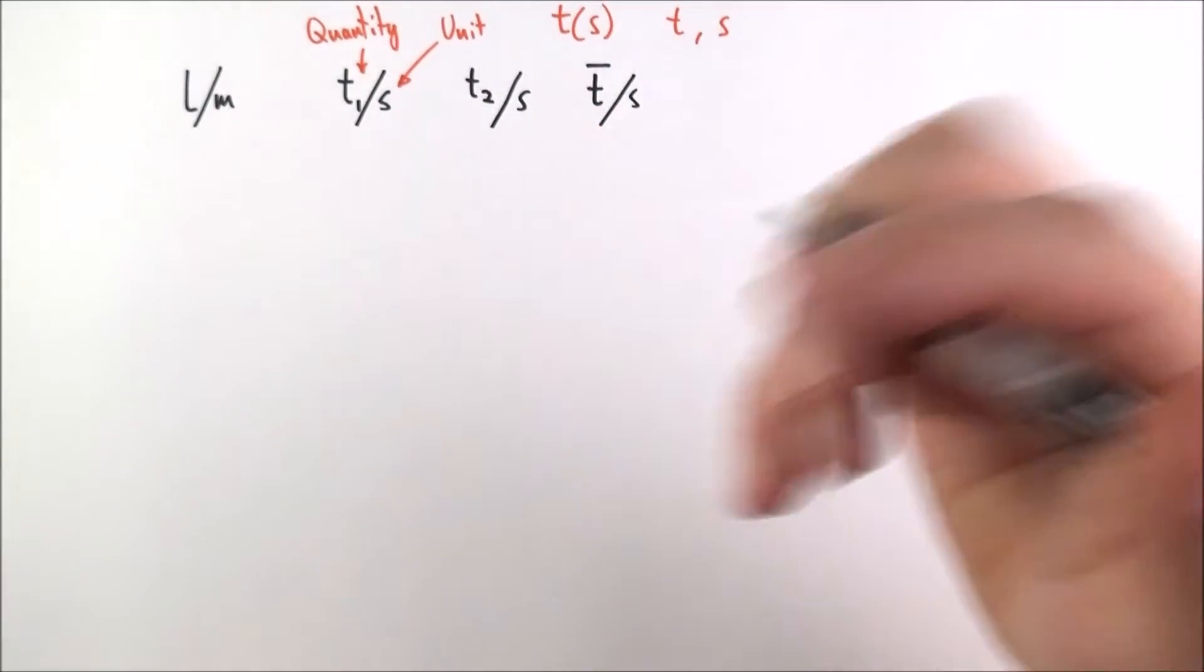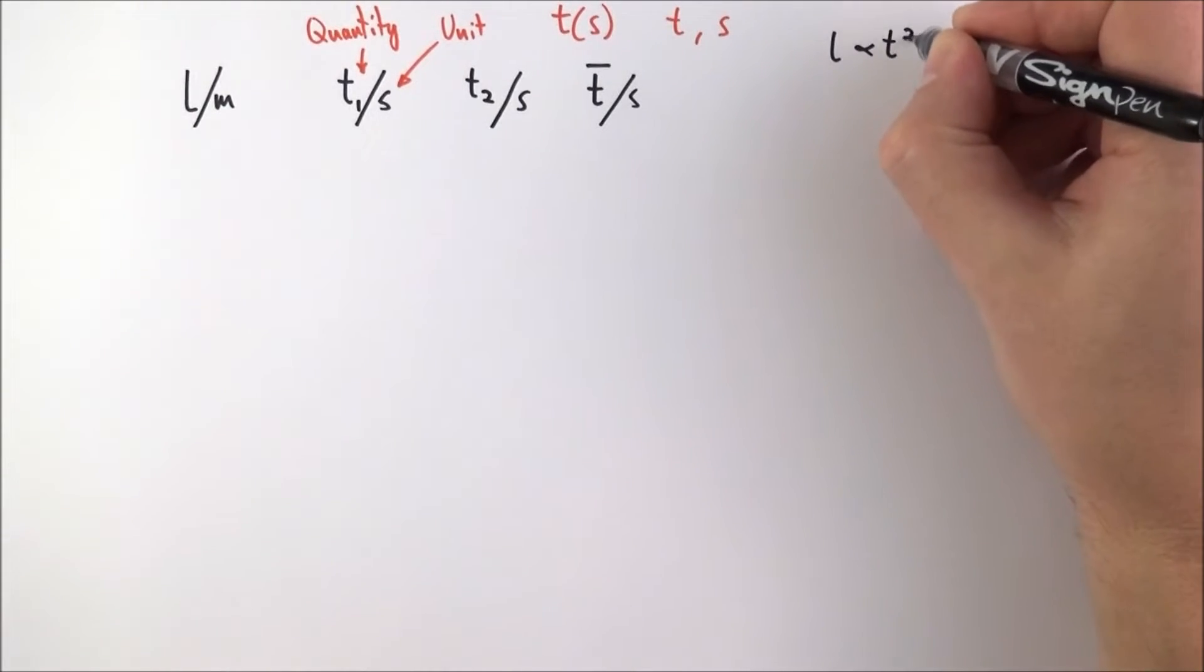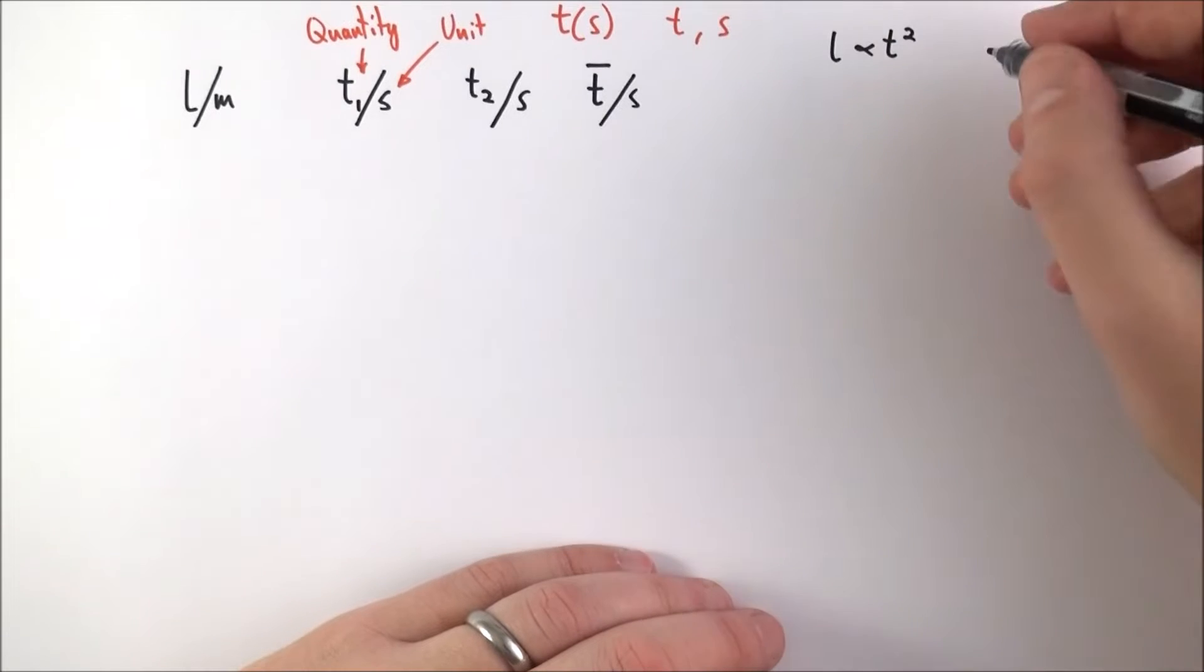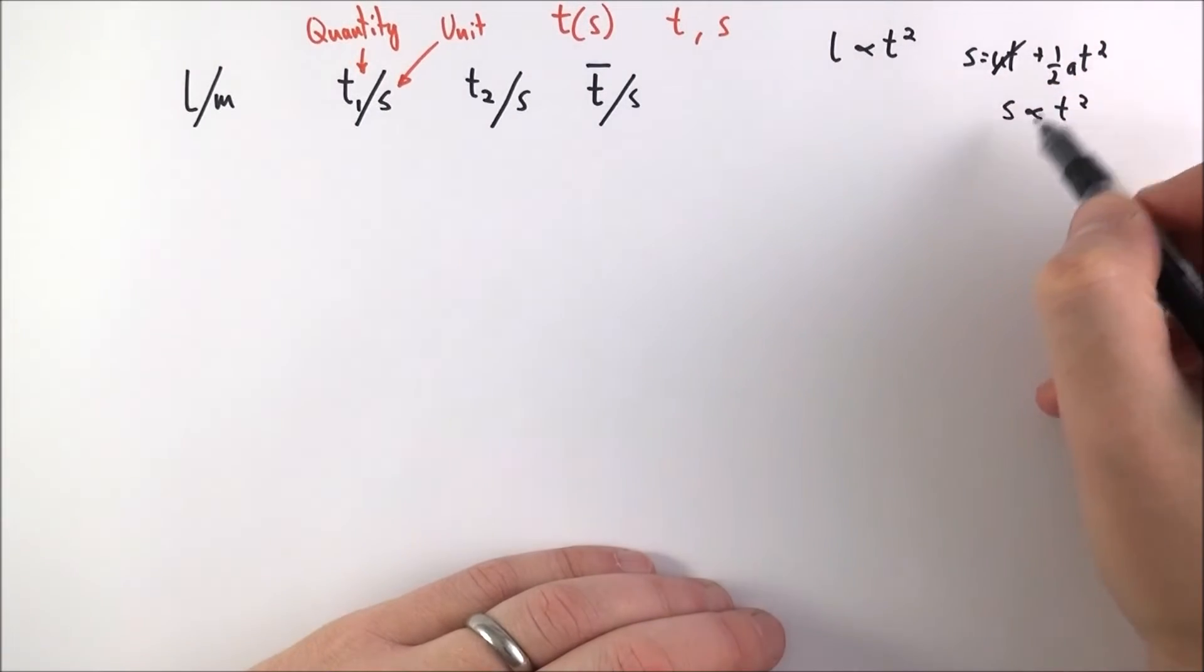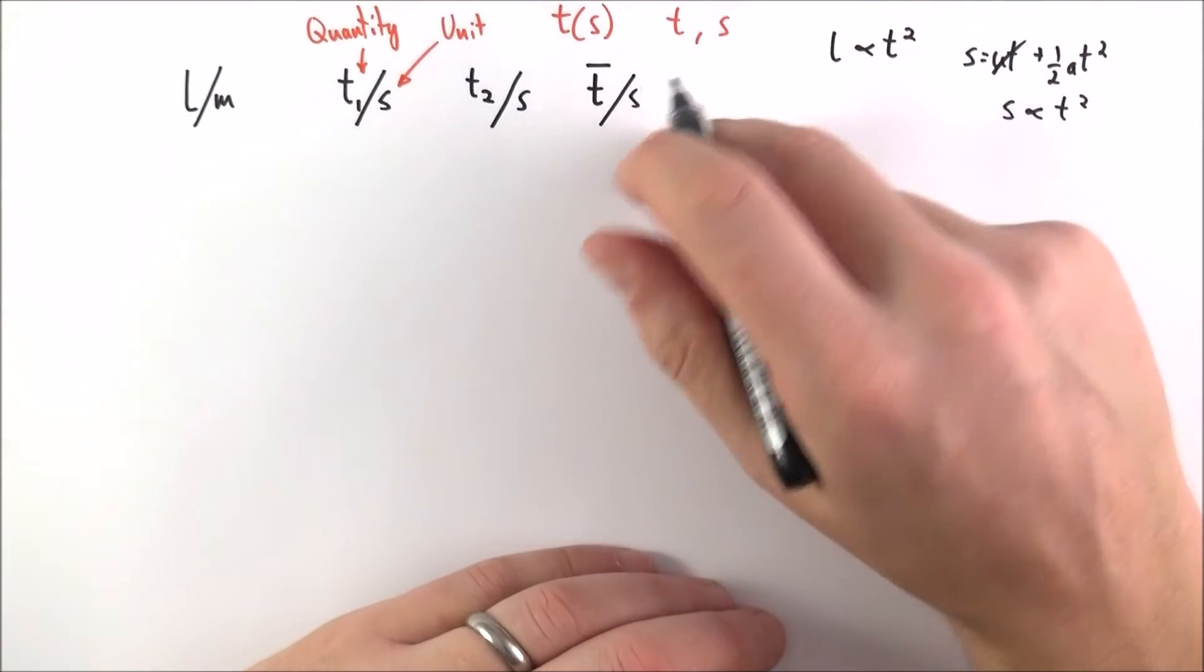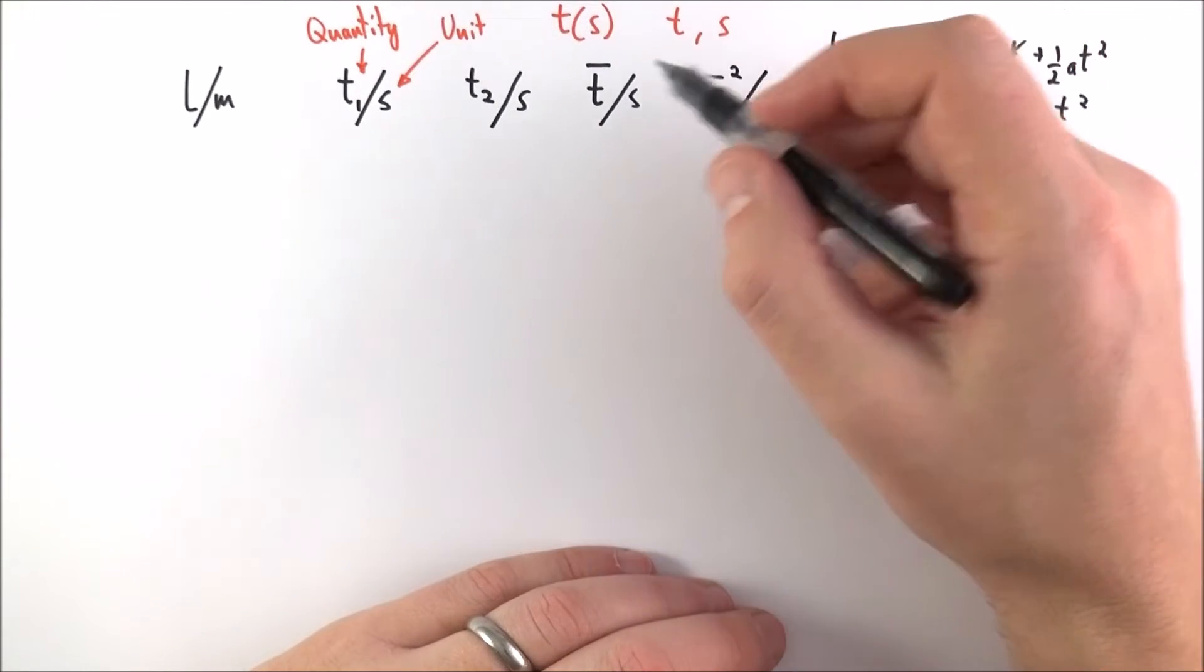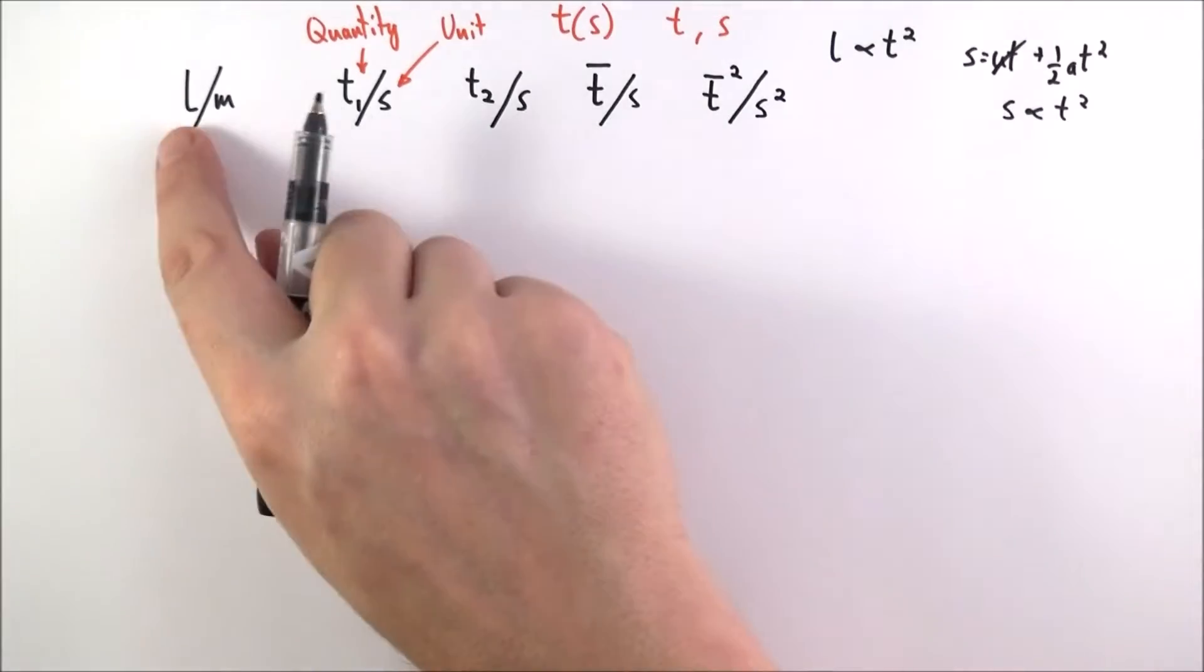And perhaps we get a clue. Maybe we're told to investigate the fact that maybe l is proportional to t squared. This might come from maybe some kind of Suvat equation. We might know that s is equal to ut plus a half a t squared and provided the object starts from rest we might say then that s is going to be proportional to t squared. So this is maybe a relationship based on some theory and we want to test it out. So there might be then another column that has your value of t bar squared and the units for this because if that's in seconds must be in seconds squared. So what I have now are my column headings.